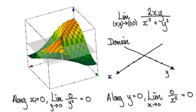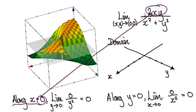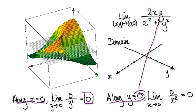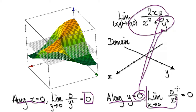Along x equals 0, if we put 0 into x, that would then become 0 — this whole thing would become this, giving you a limit of 0 if you approach it along the x-axis. Along y equals 0, put 0 in here, this whole thing will become this, giving you a limit of 0.